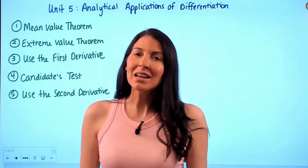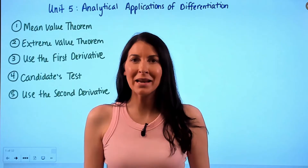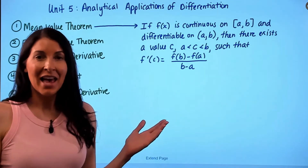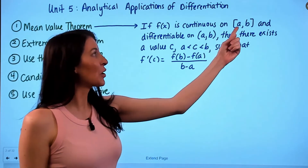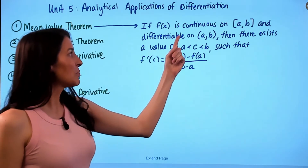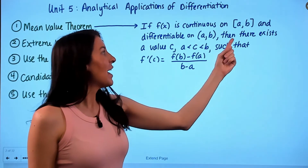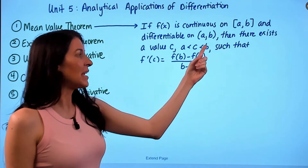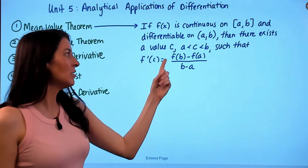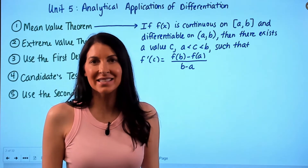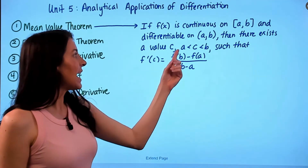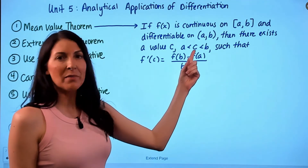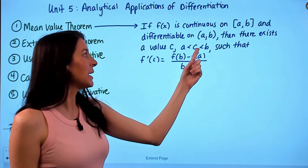We start with the Mean Value Theorem. The Mean Value Theorem is an existence theorem that you want to make sure you know for the AP exam. The Mean Value Theorem states: as long as f(x) is continuous on the closed interval [a, b] and differentiable on the open interval (a, b), then there must exist some value c between a and b such that f'(c) equals (f(b) - f(a)) / (b - a). Note that a, b, and c are all x-values.